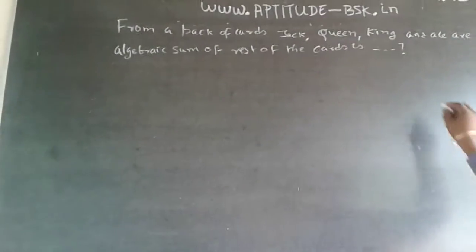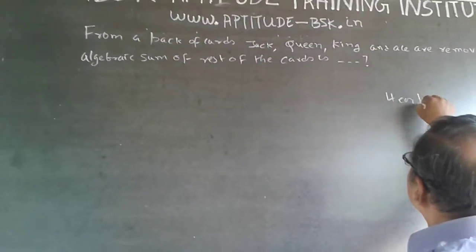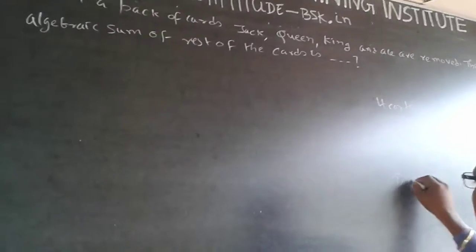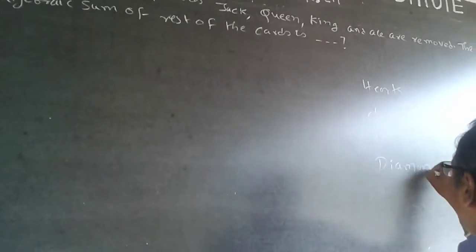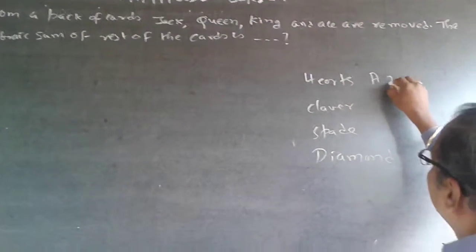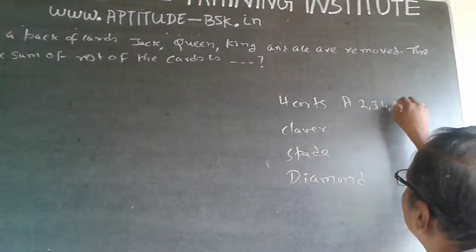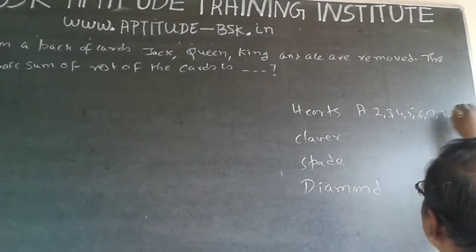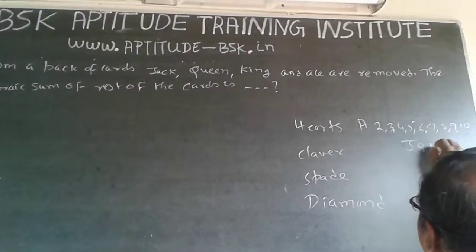Each design has cards starting from - there will be 2, 3, 4 like this: 2, 3, 4, 5, 6, 7, 8, 9, 10 and Jack, Queen and King.